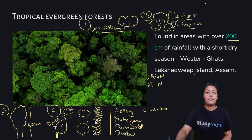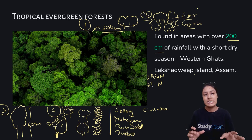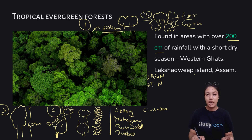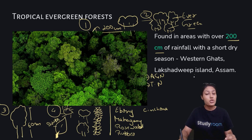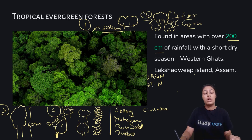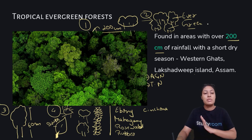In tropical evergreen forests there is a little dry season, a little warm season, and heavy precipitation. So we find trees here, and due to a little warmth, we also find shrubs and creepers. These forests are found in Western Ghats, Lakshadweep, Assam, Andaman, Nicobar, and Tamil Nadu. They also grow commercially important trees like ebony, mahogany, rosewood, rubber, and cinchona.